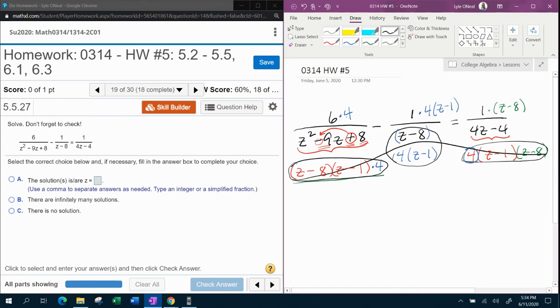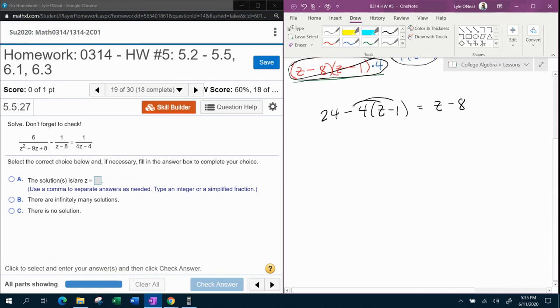Now I'm left with 6 times 4, which is 24, minus 4 times z minus 1. Remember, 1 times 4 is 4, and then times z minus 1. And then 1 times anything is itself, so z minus 8. The way that I've written this down, I don't know if you notice, but there was a minus here. And by taking this negative and attaching it directly to the 4, now when I distribute, I'm not going to mess up the signs.